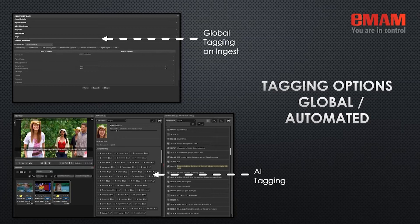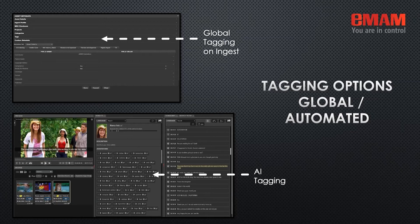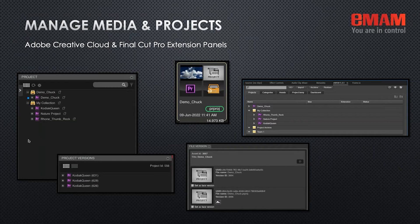We also have AI tagging, using services from Amazon, Microsoft, Google, and others, that automatically tag your media — images and videos — doing speech-to-text, facial recognition, annotations, branding, and keyword tagging. That information feeds back automatically. It is an extra charge, but you can select all media coming into the system or individually select files to be processed through the AI services.